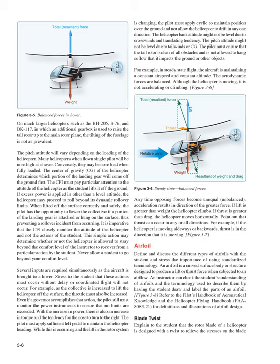Never allow a student to go beyond your comfort level. Several inputs are required simultaneously as the aircraft is brought to a hover. As the collective is increased to lift the helicopter off the surface, the throttle must also be increased. Even if a governor accomplishes that action, the pilot must still monitor the power instruments to ensure no limits are exceeded. With the increase in power, there is also an increase in torque and the tendency for the nose to turn to the right, requiring sufficient left pedal to maintain heading. The pilot must apply cyclic to maintain position over the ground and not allow the helicopter to drift.